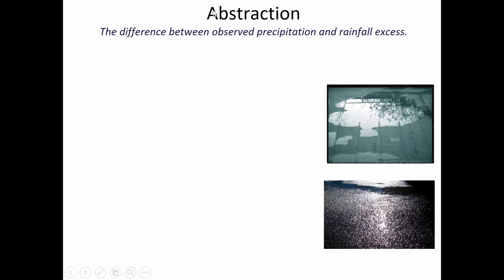We'll go through some terminology that's important to understand. One of the first ideas is the idea of abstraction. Sometimes we use the word precipitation when what we really mean is rainfall excess, because it's not necessarily precipitation that leads to runoff — it's the amount of precipitation that is above and beyond the water required for surface wetting and the amount of water that's delayed.